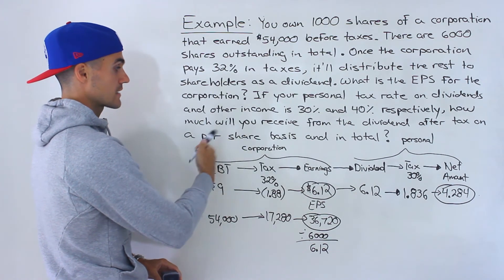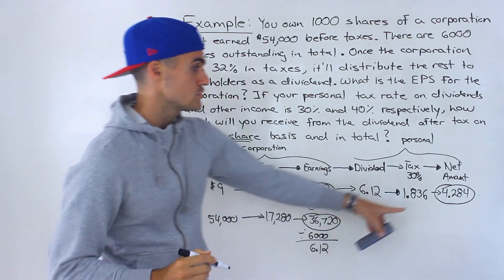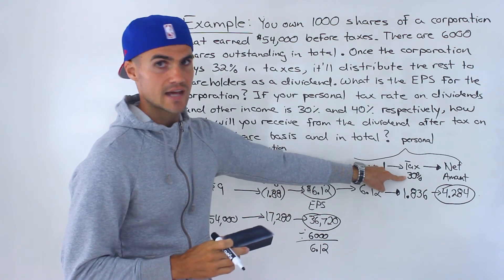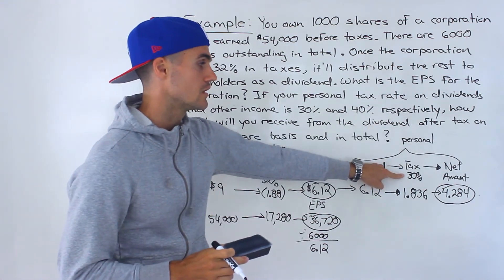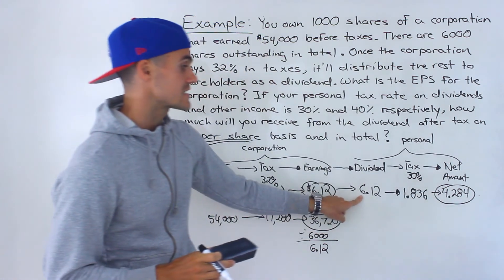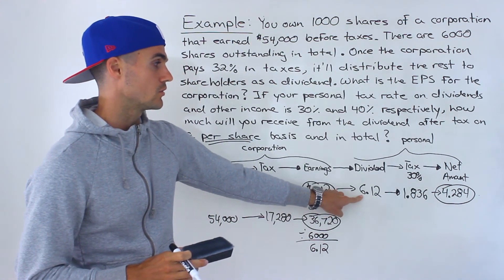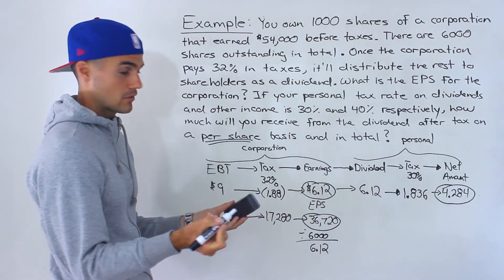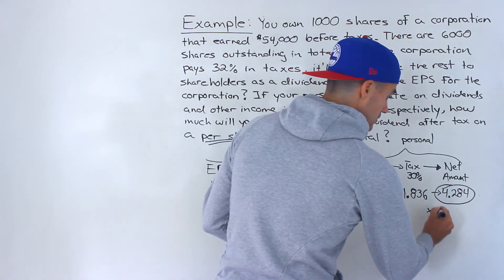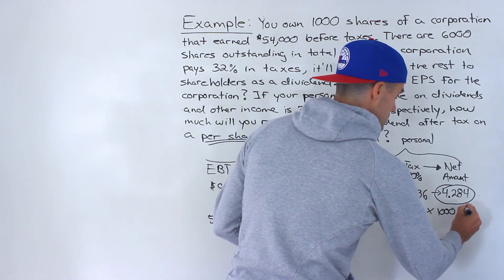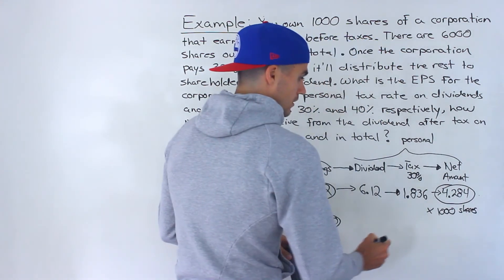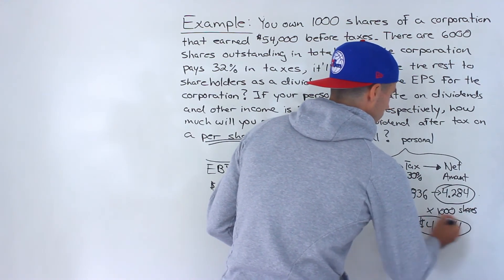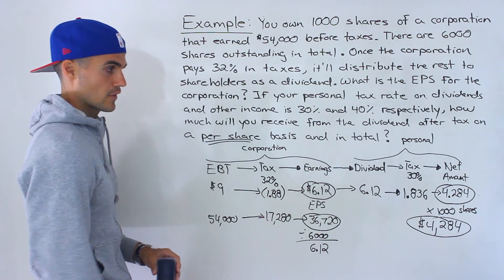So $4.284 is the answer to how much you receive from the dividend after tax on a per share basis. Note that other shareholders would get the same per share dividend amount, but the net after-tax amount may differ if they have a different tax rate. Then since you own 1,000 shares, you multiply $4.284 by 1,000 shares, and the total amount you receive is $4,284.